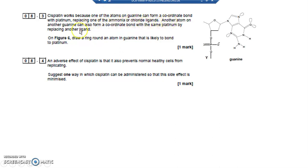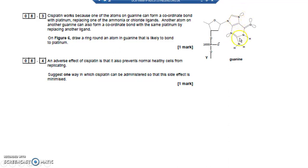Which atoms on guanine can form the same bond with platinum, replacing another ligand? You're looking for two similar atoms with lone pairs of electrons, and your answer is the N atoms. The N atoms bond to the platinum - they've got a lone pair here and there's another N there. The oxygen has two lone pairs but it's not two separate atoms. Those two N atoms are identical; one will bond to cisplatin and the other will bond to cisplatin as well.